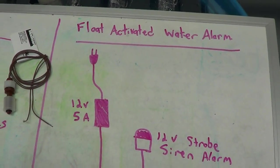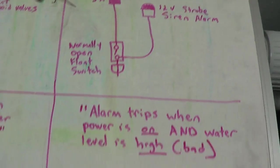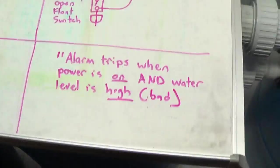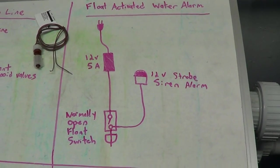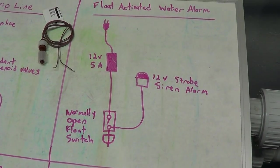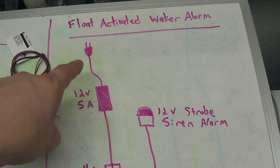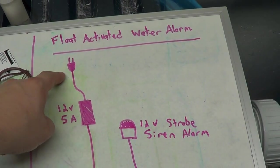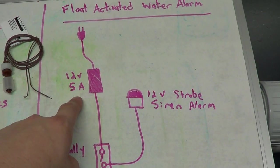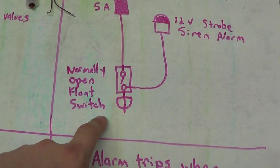Moving on to the next project is the float activated water alarm. They do sell water alarms that basically it's like a smoke detector and you can just throw it on the floor and if it detects water it will go off. Those are fine. I wanted to go with something a little bit more high tech, something a little bit more precise, something a little bit cooler as well. And it's going to start the same way. We've got our wall socket power which is going into a 12 volt 5 amp adapter which is going to a normally open float switch.